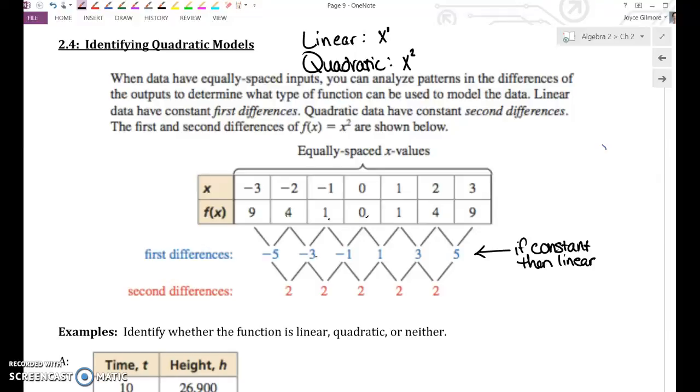But notice in this model, that first level of differences is not constant. We've got negative 5, then negative 3, then negative 1. It's not the same number. So this function is not linear. So then take the first level of differences and find the pattern in those. To get from negative 5 to negative 3, you would add 2. To get from negative 3 to negative 1, you would add 2, and so on. If the second level of differences are the same, so if you get a constant number, then the function is quadratic.